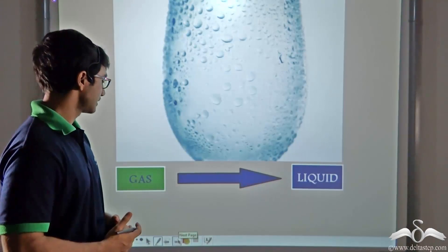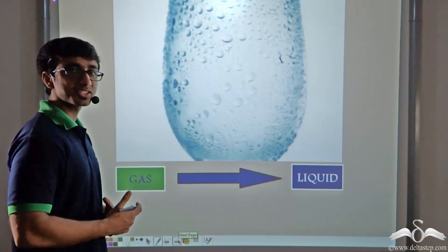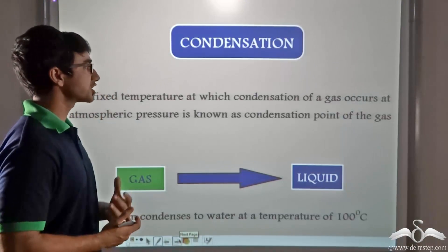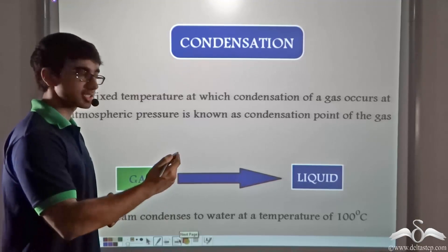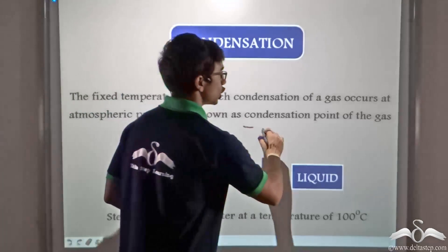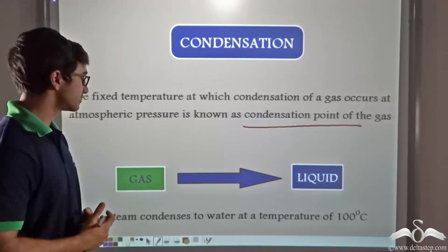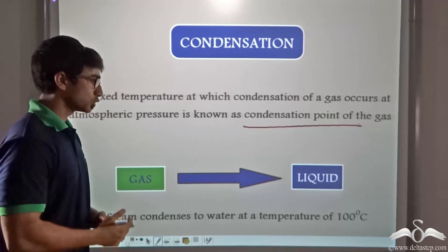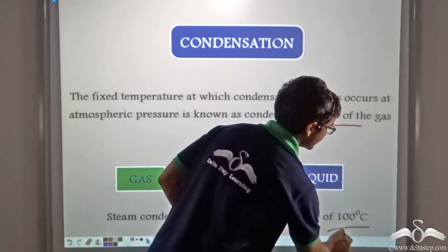So this process when a gas is being converted into liquid is known as condensation. The fixed temperature at which condensation of a gas occurs at atmospheric pressure is known as the condensation point of the gas. In the previous case, we considered that steam was being condensed into water. The temperature at which steam condenses into water is 100 degrees Celsius.